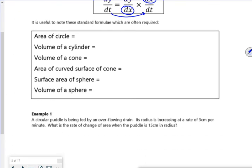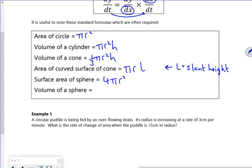So there's a quick bit here about the equations. I've got area of circle equals πr², volume of a cylinder equals πr²h, volume of a cone equals one-third πr²h, which you probably won't have remembered. The area of the curved surface area is πrl, where l is the slant height.